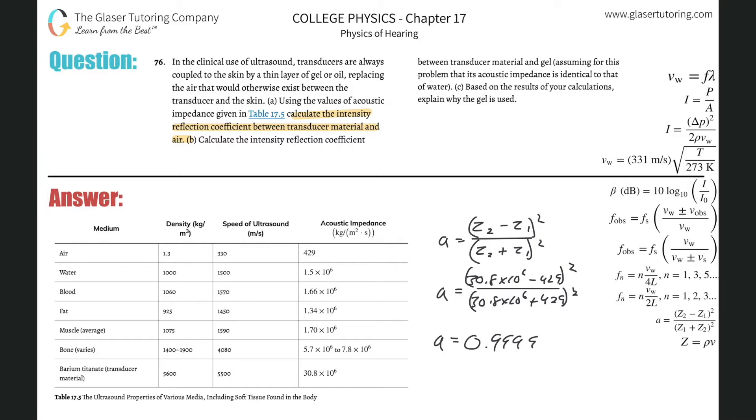So it's basically one, okay? And then that's letter A. And now letter B, calculate the intensity between the transducer and the gel, okay? Assuming for this problem that it's acoustic is the same as water. So basically between water and this barium, whatever, the transducer material.